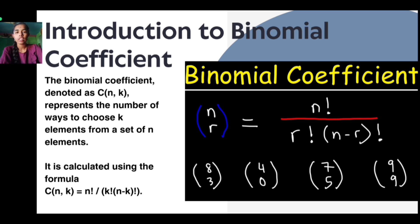It is calculated using the formula: C(n,k) = n! / (k! × (n-k)!).